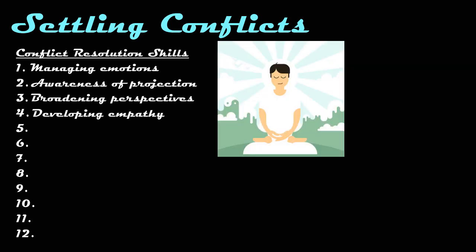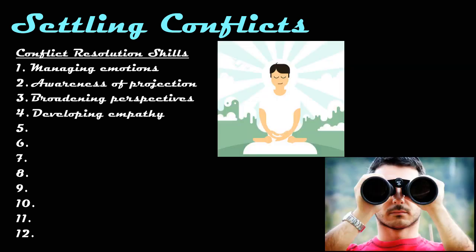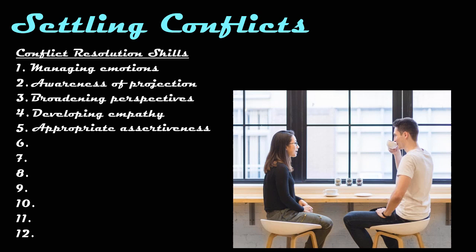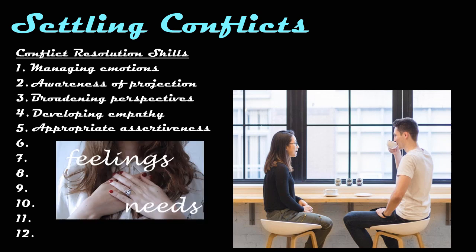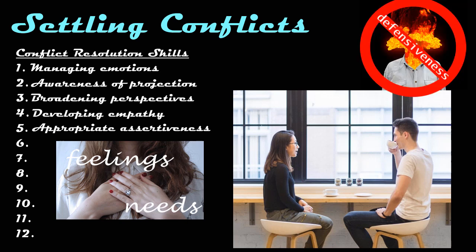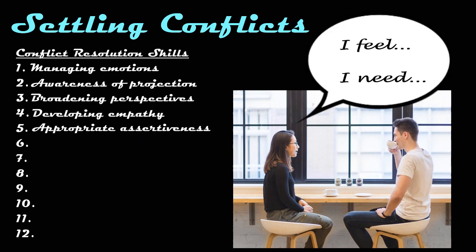Once you have your emotions under control and you have gained some perspective on the conflict, it is time to think about how to satisfy the needs of the stakeholders. Appropriate assertiveness is a conflict resolution skill that entails stating your feelings and needs in a way that is calm but firm and does not inflame the situation by arousing feelings of defensiveness in the other person. When utilizing appropriate assertiveness, it is helpful to speak in well-constructed I statements. An I statement clearly explains how you feel and what your needs are. It is free of expectations for the other person's behavior and is not a solution to the problem but merely a conversation starter for conflict resolution.